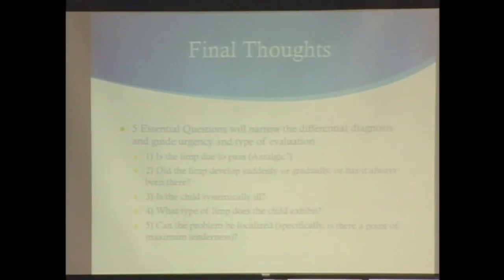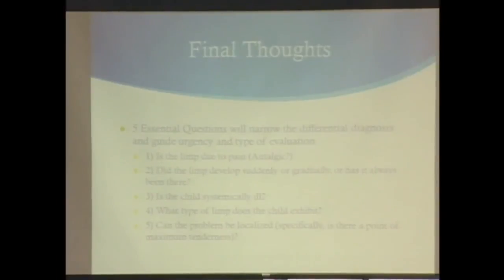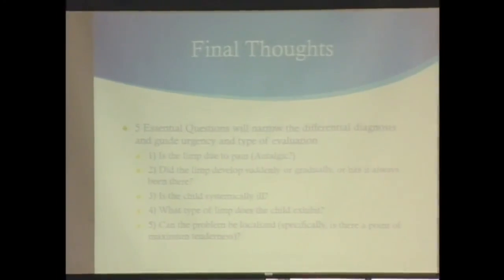In conclusion, five basic questions will guide your differential and workup. Is the limp due to pain — is it antalgic? Did it happen suddenly, gradually, or has it always been there? Does the child appear ill or have other systemic symptoms? What type of limp? And can we localize it? Thank you.